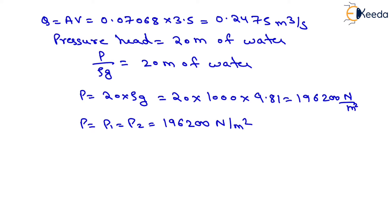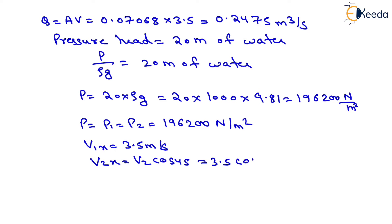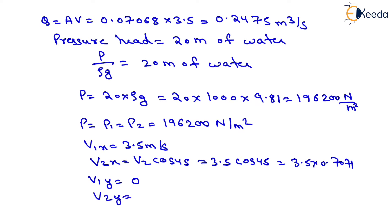Now we resolve the velocity components. In the x-direction: v1x = 3.5 m/s, and v2x = v2 cos45° = 3.5 × 0.7071. In the y-direction: v1y = 0, and v2y = v2 sin45° = 3.5 × 0.7071.